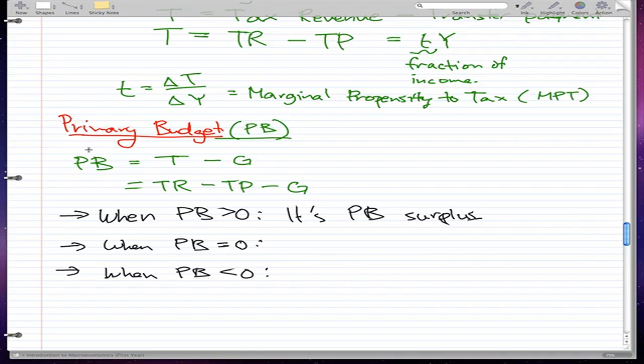What I mean is the total cost for transfer payments and government spending is less than the tax revenue. Say transfer payments is $20, government is $5, and tax revenue is $100. If we take $100 - $20 - $5, that's $75, and the government made a profit of $75. That's the primary budget.